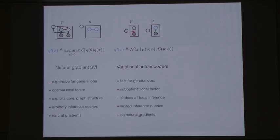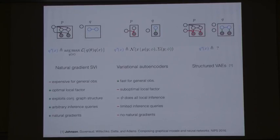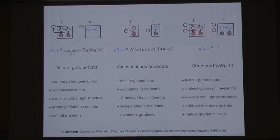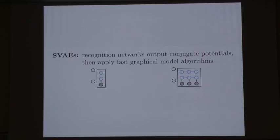As you might guess from how I've set up this comparison, I'm now going to talk about our work, which tries to combine the strengths of both. We call these structured variational autoencoders. We want to be fast for general observation models like neural network observations, but also exploit graphical model structure over latent variables. Here's the idea in one line: we're going to have recognition networks, but instead of having them perform all inference for local latent variables all at once, we're going to have them produce graphical model potentials — specifically conjugate graphical model potentials — so we can use all our nice PGM inference algorithms.